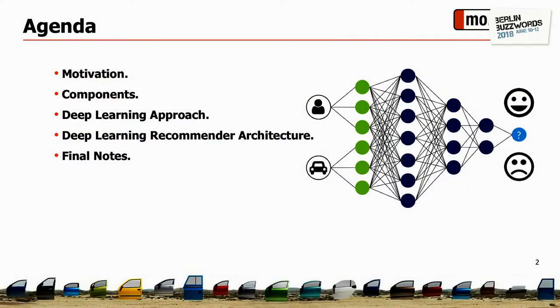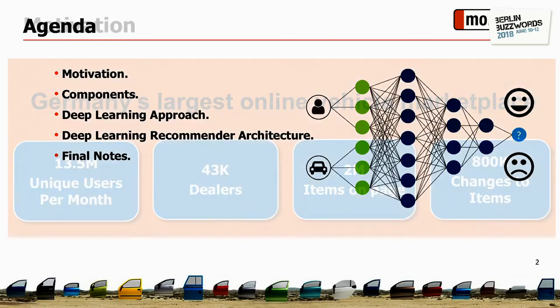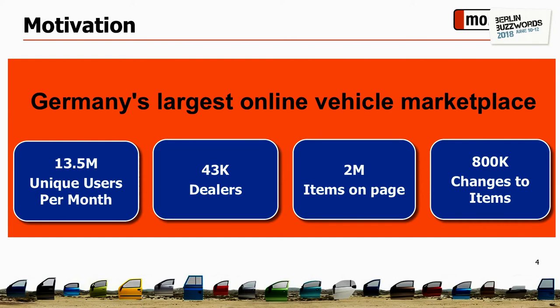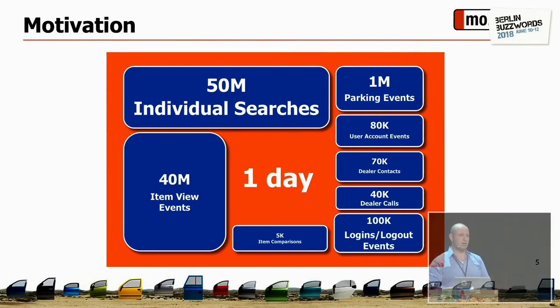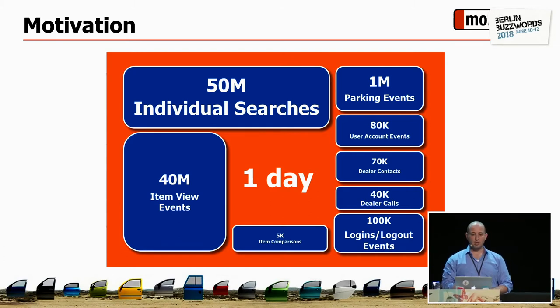For the agenda, I'll start with motivation about the recommender and why we need it at Mobile.de specifically, then cover some components and the deep learning architecture. Mobile.de is Germany's largest online vehicle marketplace — we have almost 2 million different ads, constantly updated each day, around 43,000 dealers covering almost all dealers in Germany. We have around 13 million unique visitors each day, and we generate about 100 million events per day from user interactions such as item views, searches, and saving to favorites.